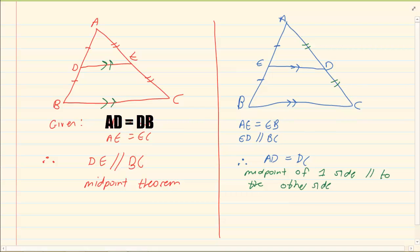Now the last thing to remember and this is by far the most important one is that in both cases DE would equal to half of BC.